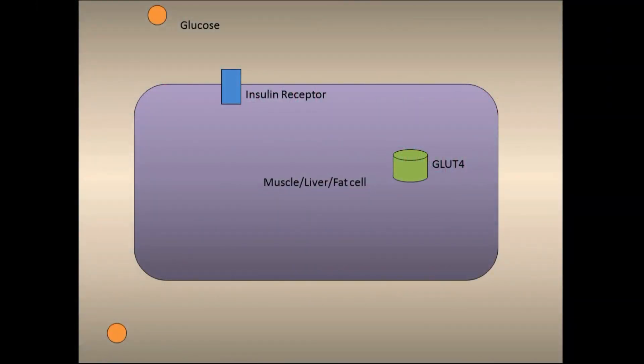In most cells, a hormone produced by the pancreas called insulin is responsible for letting glucose into the cells from the blood. Insulin binds to insulin receptors on cells, which send signals to activate GLUT4, a glucose transporter.